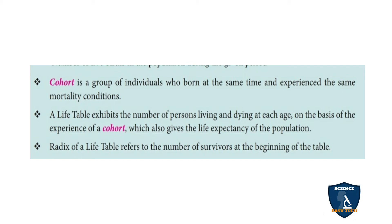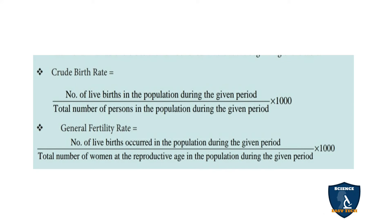Next is crude birth rate. Crude birth rate equals the number of live births — that is, babies born alive — in the population during the given period, divided by the total number of persons in the population during the given period, multiplied by 1000.